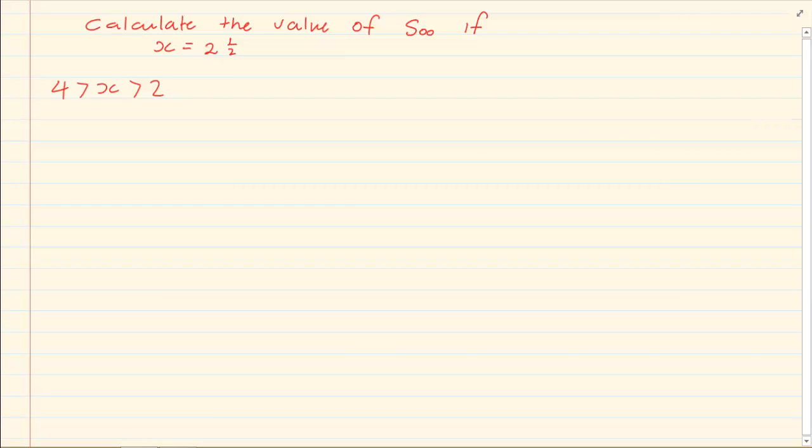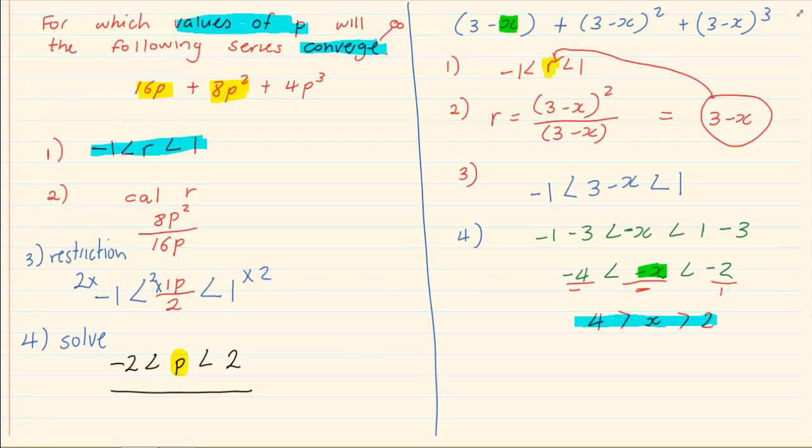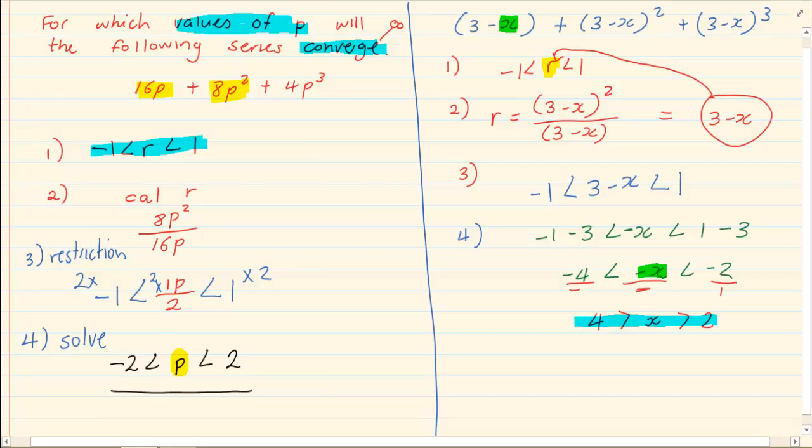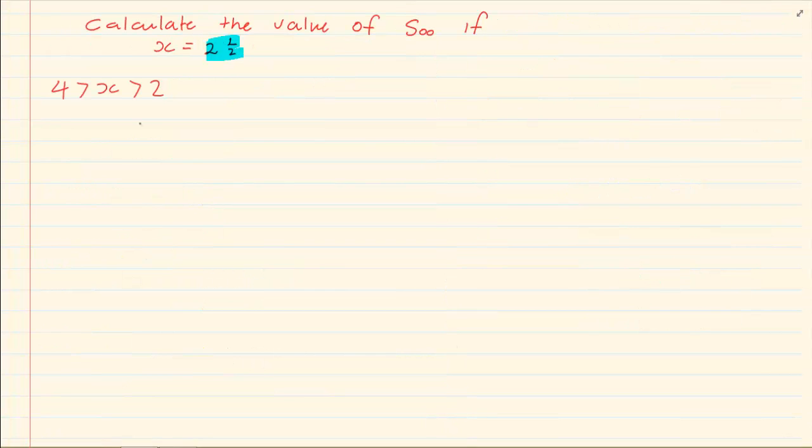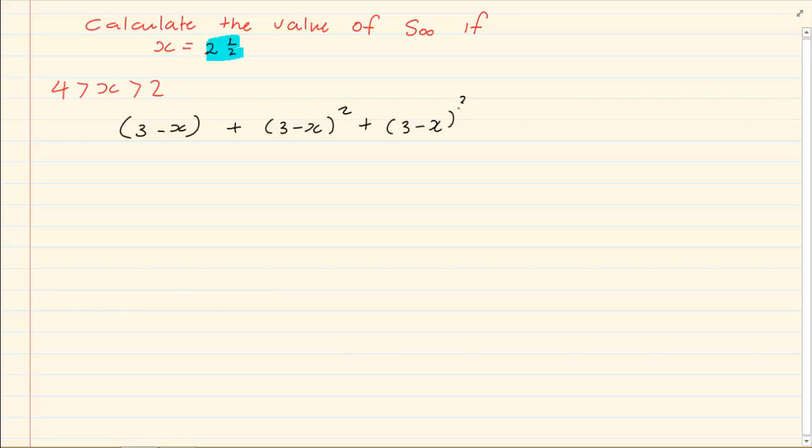So when they say x is equal to 2 and a half, then we have fulfilled the condition. Now how do we get r? The number pattern is 3 minus x plus 3 minus x squared plus 3 minus x cubed.